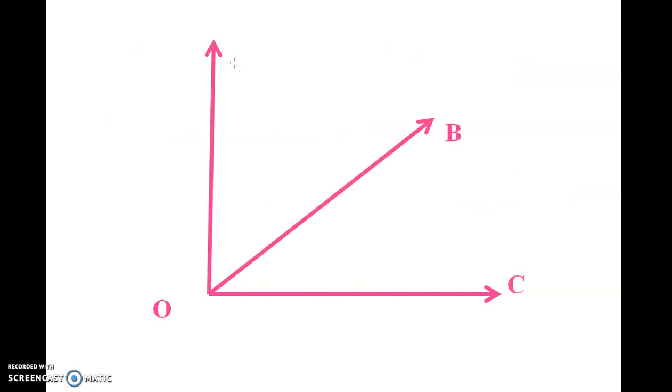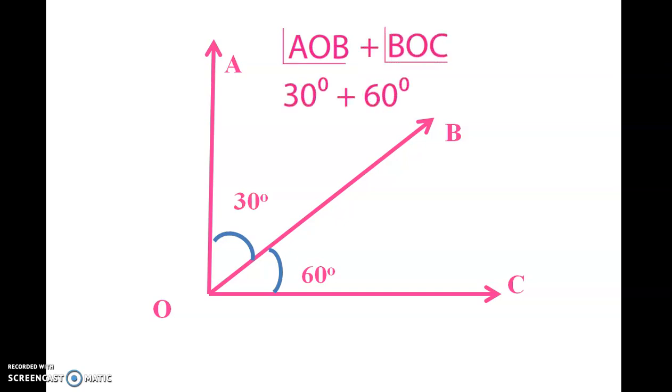Here is an example: 60 degree angle and 30 degree angle. Angle AOB plus angle BOC: 30 degrees plus 60 degrees equals 90 degrees. Now let us see another example.